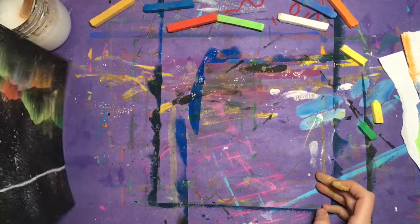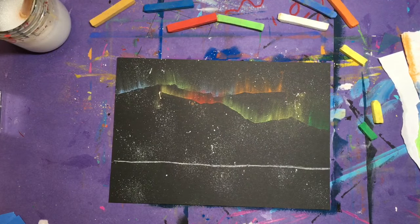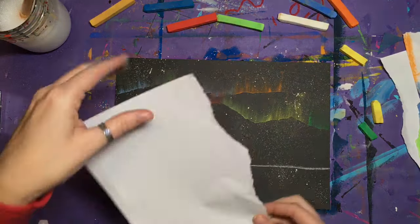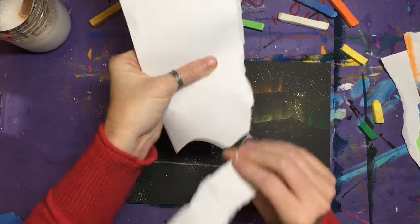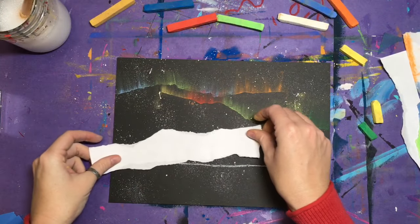If you find that you're getting too much chalk dust on your artwork, just tap the side of it on your messy mat, and then you can go back to making more northern lights. Just make sure that you keep them all up above the horizon line.